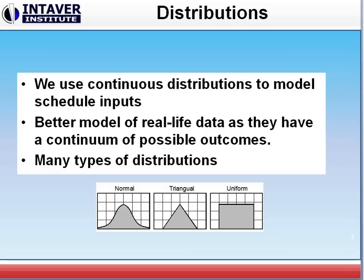So distributions, there's many types. There are continuous distributions. Rather than being discrete values, we model them as continuous input. This is because there's a better model of real life data, the real examples that will occur. There's many types of distributions. We saw a triangular one, there's also a normal. Here is a uniform.